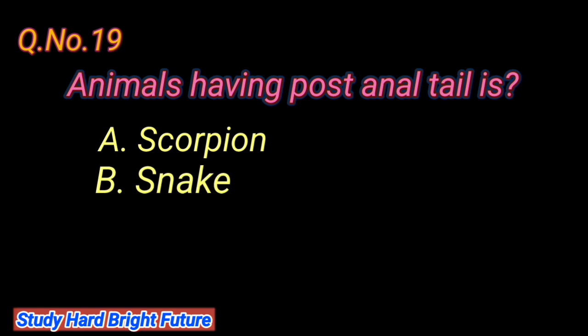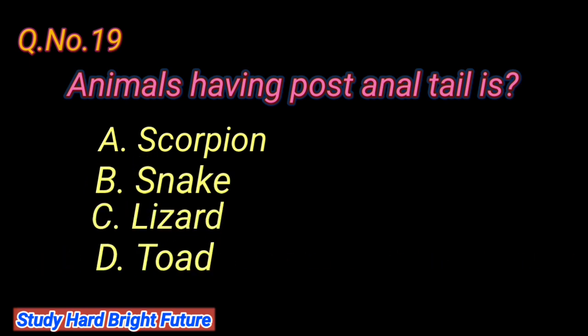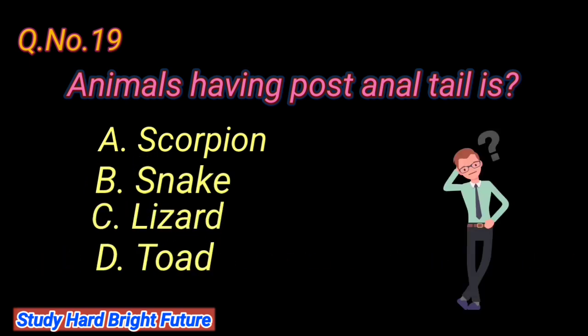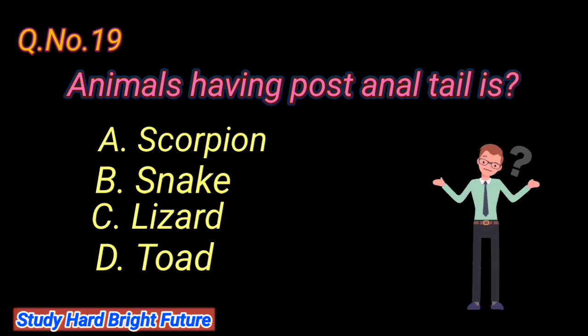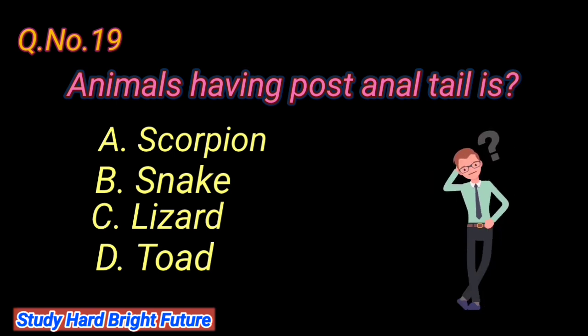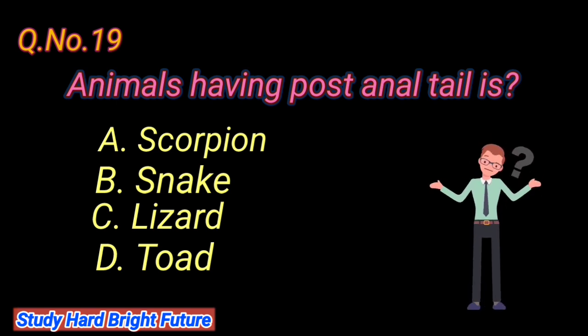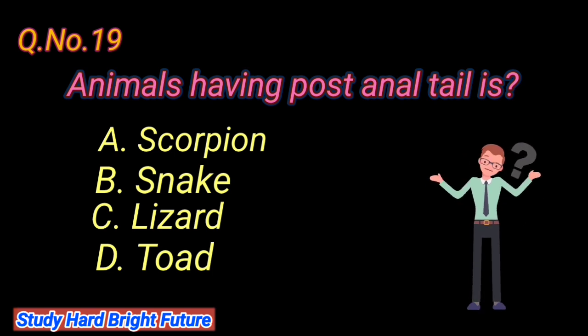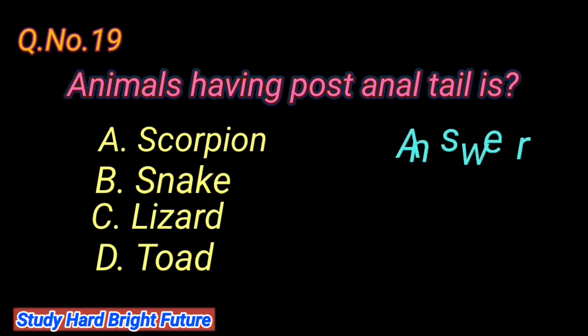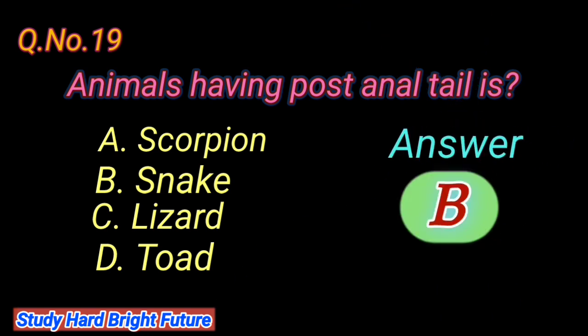Question number 19: Animals having a post-anal tail. A. Scorpion, B. Snake, C. Lizard, D. Toad. The right answer is B. Snake.